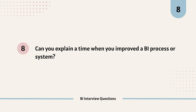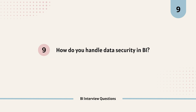The ninth question is: how do you handle data security in BI? This can be answered with specific tool examples. In Tableau, Power BI, or Looker, you can implement techniques like row-level security or user-level security to limit the amount of data visible to a particular person or role. You can take similar examples from your own experience and explain scenarios where you implemented security in a BI tool.